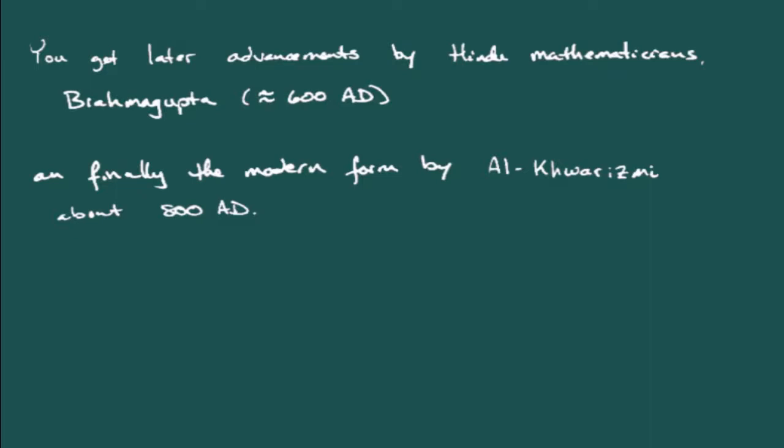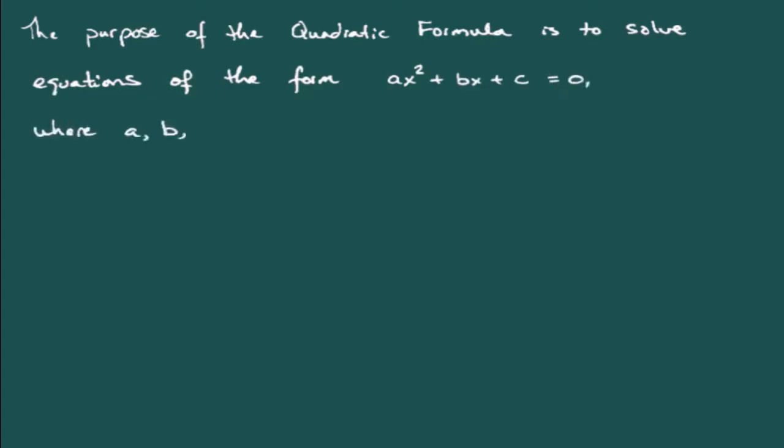Now, you can say, alright, so that's a little bit of the history about it. What about the purpose? What's really the quadratic formula for? To be honest, it's used to solve equations that have the form ax squared plus bx plus c is equal to zero, where we're just choosing a, b, and c to be some numbers.